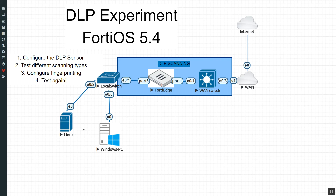There are a couple of different options. I had one of my past participants ask a great question: if we have a picture file, how can we get that picture file to pick up on our sensor? What happens if we change the file type? What happens if we embed it into another file? So instead of just giving a textbook answer, I thought we'd go ahead and see.